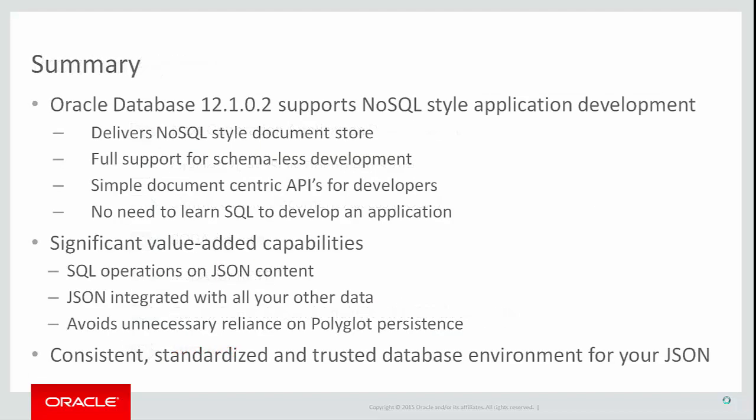In summary, with Oracle Database 12c we fully support the NoSQL style of application development. There is full support for schema-less application development, allowing changes to be made to an application data model without needing to change the storage schema or take the application or database offline. There is a simple document-centric API that allows application developers to get up and running very quickly, with no requirement to know or understand SQL in order to develop the application. However, Oracle Database 12c goes far beyond what is possible with the NoSQL-style document store, with SQL analytics and reporting on JSON content in place, requiring no expensive ETL operations.